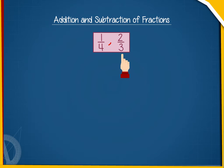Before adding, we have to convert them into like fractions. For this, we will find the LCM of their denominators, 4 and 3, which is 12.